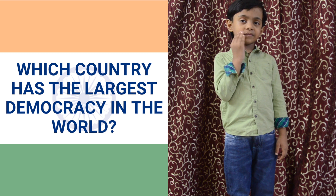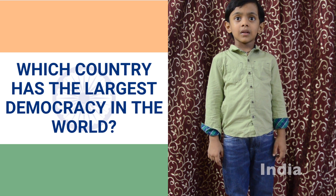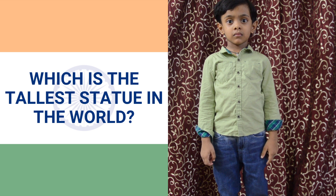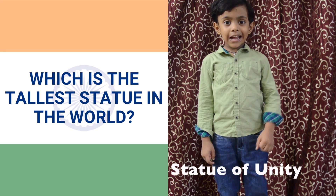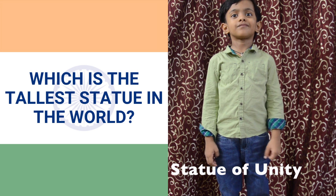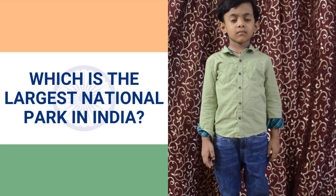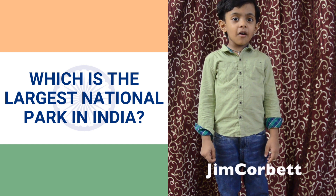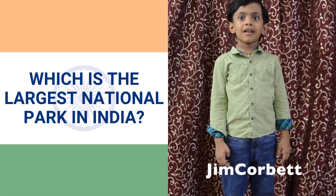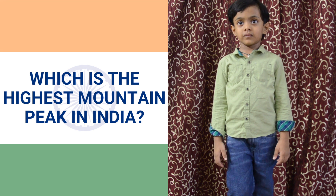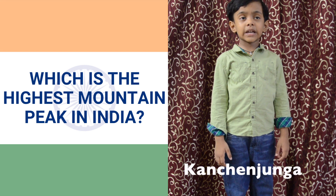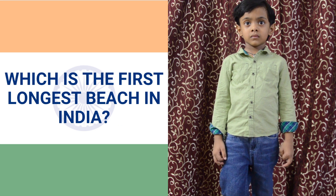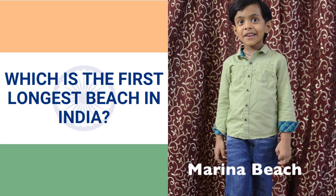Which country has the largest democracy in the world? India. Which is the tallest statue in the world? Statue of Unity. Which is the largest national park in India? Incomment National Park. Which is the highest mountain peak in India? Kanchan Janga. Which is the first longest beach in India? Marina Beach.